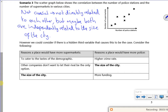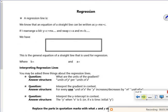Right then, so it says we could consider if there was a hidden third variable, like that one above. So reasons a place would have more supermarkets, reasons a place would have more police - these are the reasons. The size of the city is in both of them, which is what we were just saying, isn't it? Right then, let's have a look at the next page.